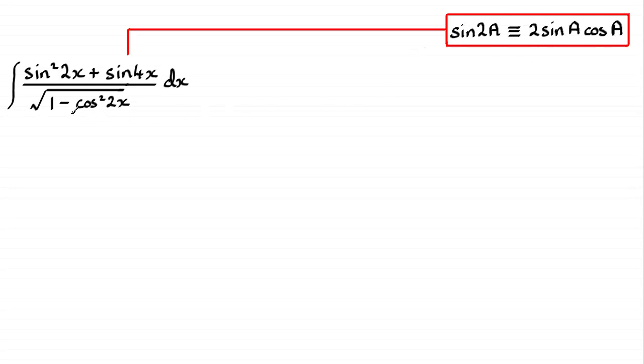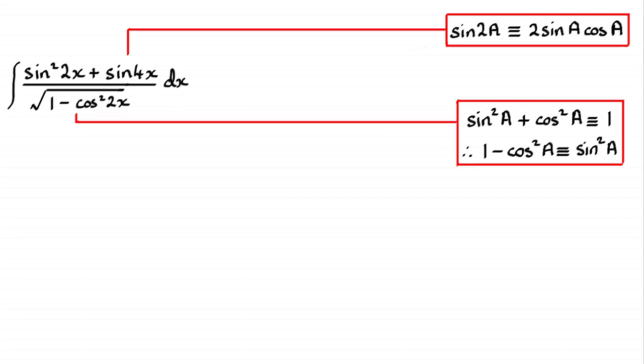And I also noticed that in the denominator here, 1 minus cos squared of an angle can be expressed as sine squared of that angle. Remember this identity, you should be familiar with it: sine squared of an angle plus cos squared of the same angle is identical to 1.